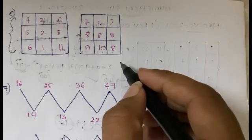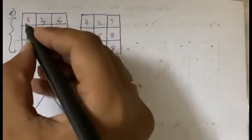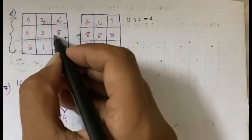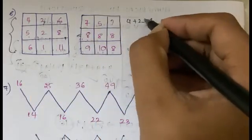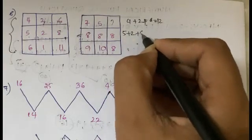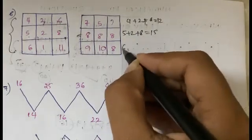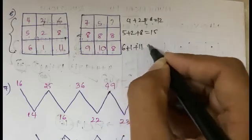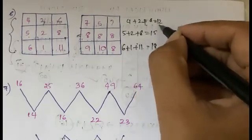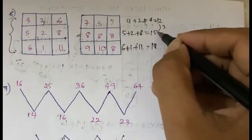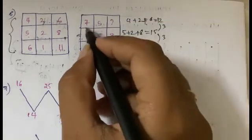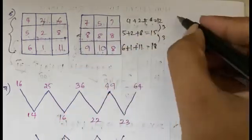See — 4 plus 2 is giving you 6, but 5 plus 2 is not giving you 8, so that logic doesn't work. Let's try adding all three: 4 plus 2 plus 6 gives 12, and 5 plus 2 plus 8 gives 15. Then 6 plus 1 plus 11 gives 18. If you observe, the difference between 12, 15, and 18 is consistently 3. So let's apply this same pattern.